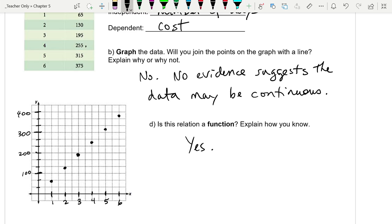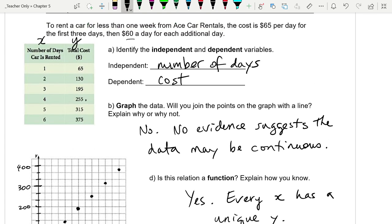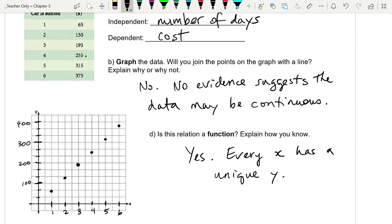Will you join the points with a line? I would say probably no. No evidence suggests the data may be continuous. As far as we know, we get one day, two days, three days. We can't rent the car for a day and a half. Is this relation a function? Yes. Every X has a unique Y. I don't think it's linear though, because the first three days have a special rate. It would actually be a straight line for the first two, and then another straight line with a bit of an angle between them. You just can't tell that on the scale.